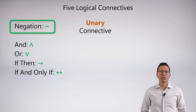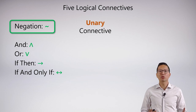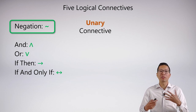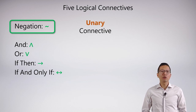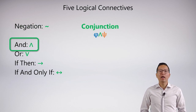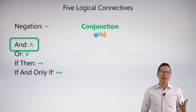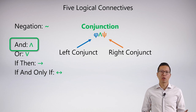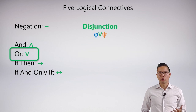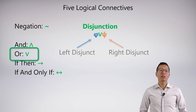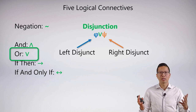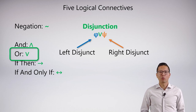The next four connectives — all the binary connectives — have alternate names that we use a lot in logic, and we really need to be comfortable with these names because they're going to help us be precise when we do symbolization. The first connective is the and connective, which we call a conjunction. We have an example: phi conjunction psi. On the left side we call it the left conjunct, and on the right side the right conjunct. Or is extremely similar except we call it a disjunction, and just like before we have the left disjunct and right disjunct, phi and psi.